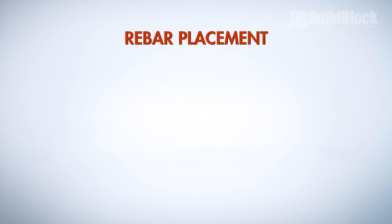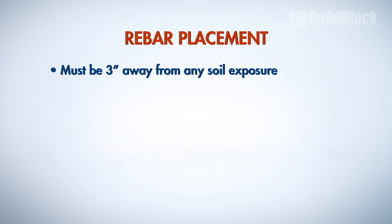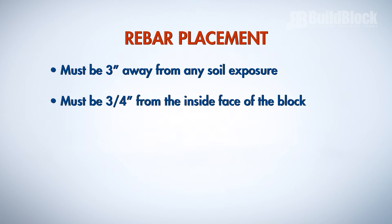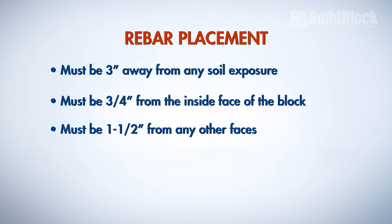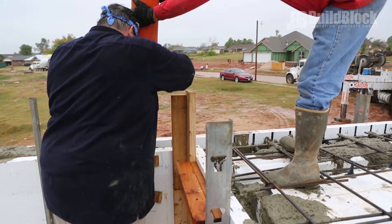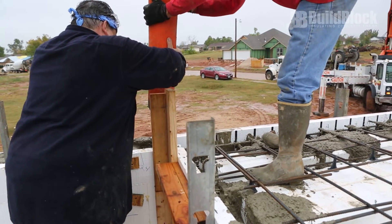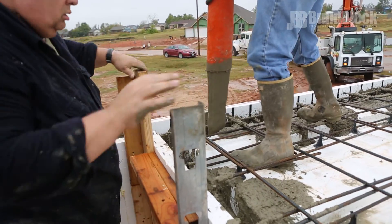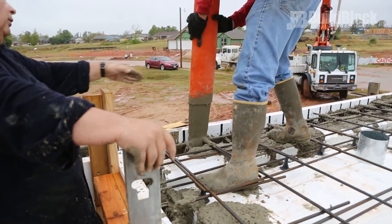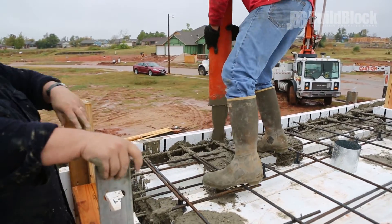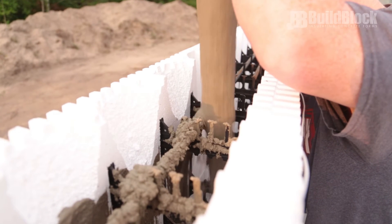Rebar inside concrete must be three inches away from any soil exposure. Rebar must be three-quarters of an inch from the inside face of the foam blocks as well, and one and one-half inches from any other faces such as bucking. This prevents moisture from intruding into the concrete and decaying the rebar, and will also provide sufficient concrete coverage for structural integrity.